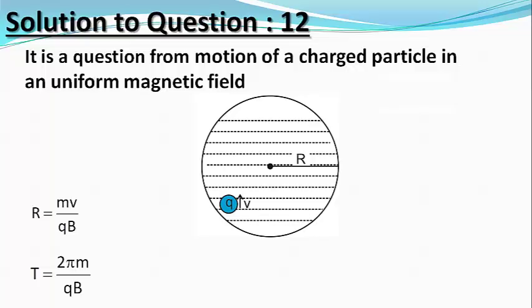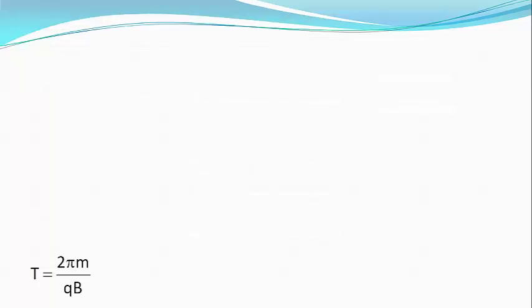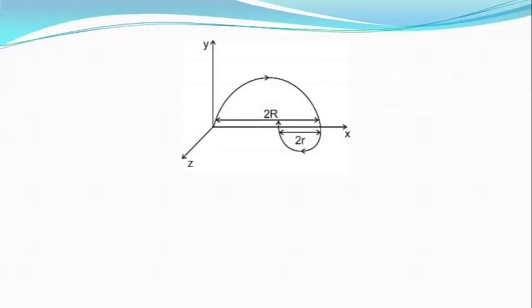Since here the charge particle is moving perpendicular to the magnetic fields B1 vector and the B2 vector, therefore particle will go in circular paths in the two regions.